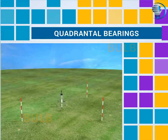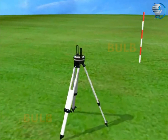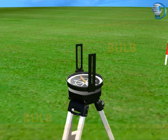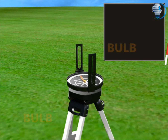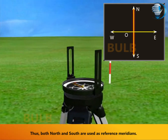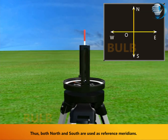Quadrantal Bearings. Let us see the quadrantal bearings in compass surveying. In this system, the bearing of a line is measured eastward or westward from north or south, whichever is nearer. Thus, both north and south are used as reference meridians.